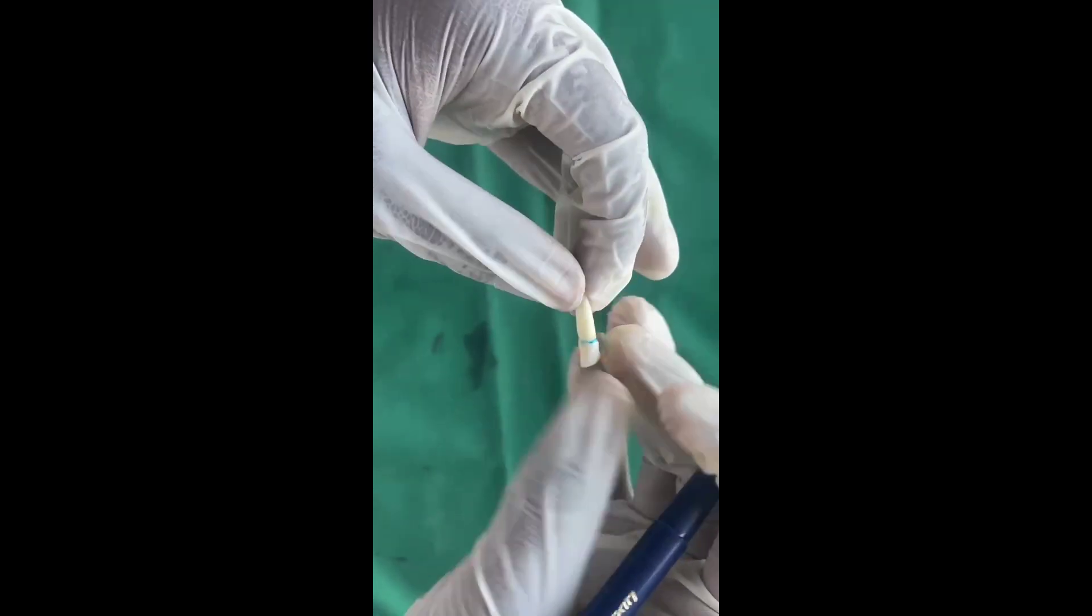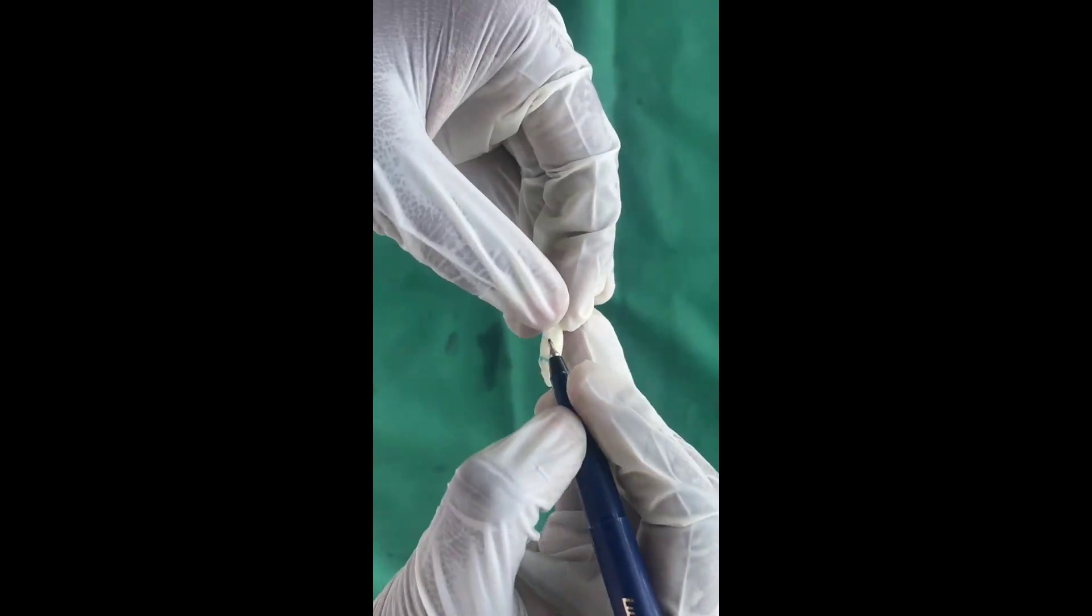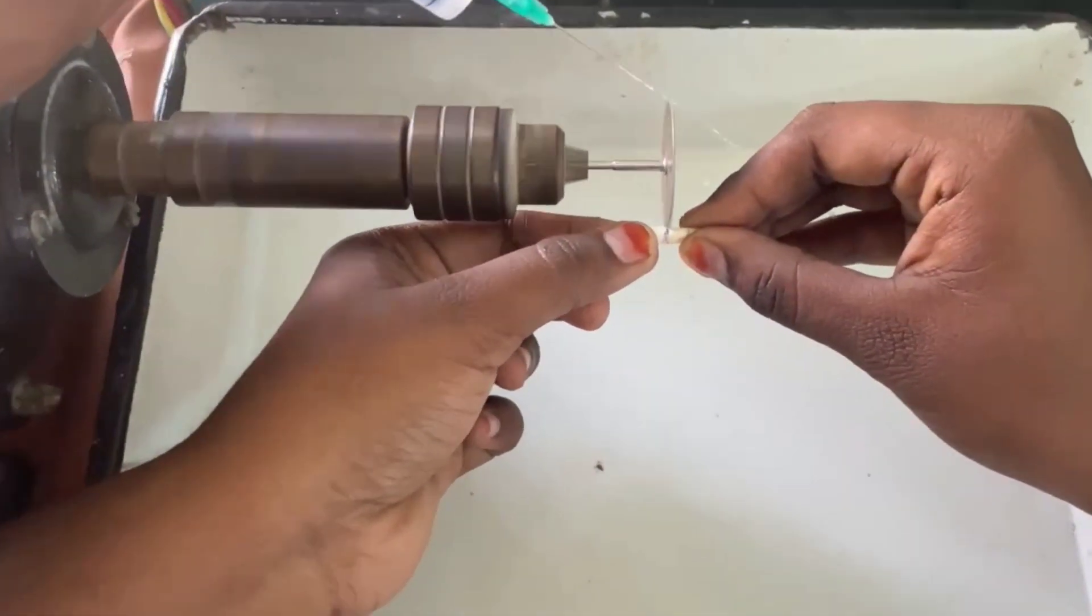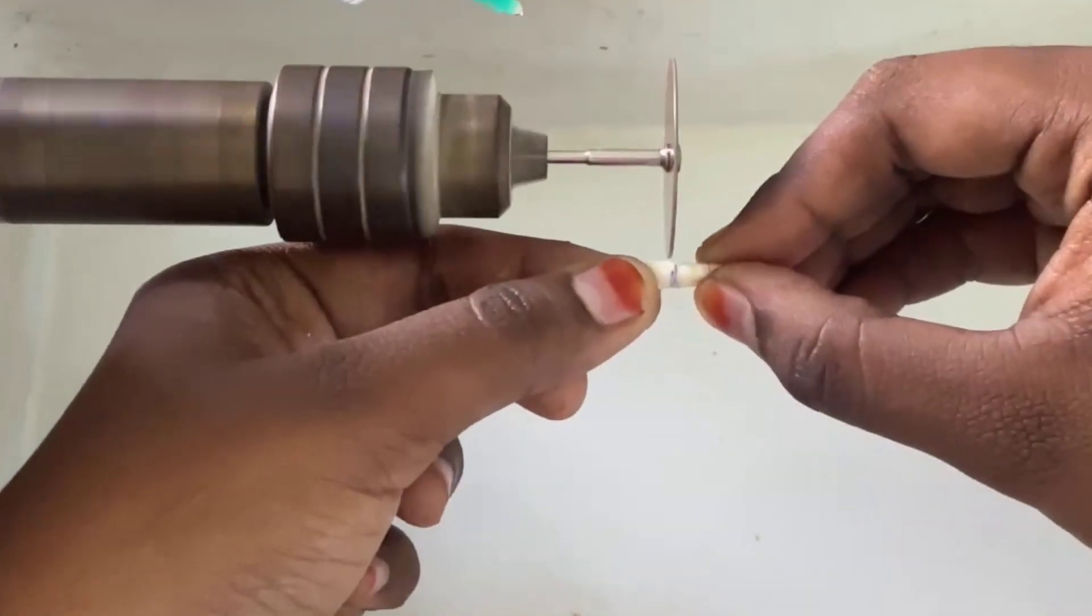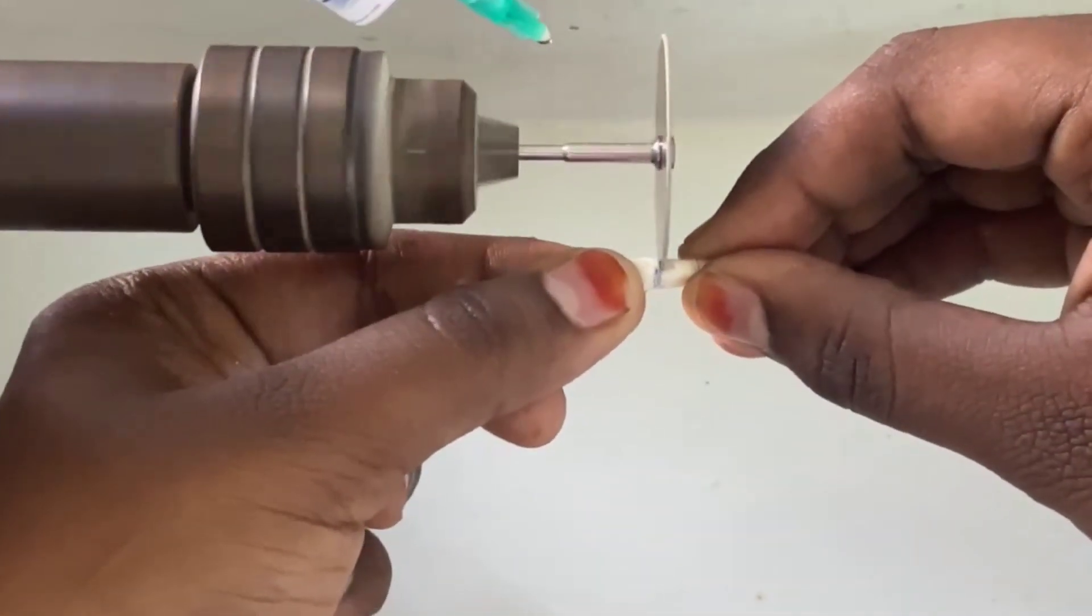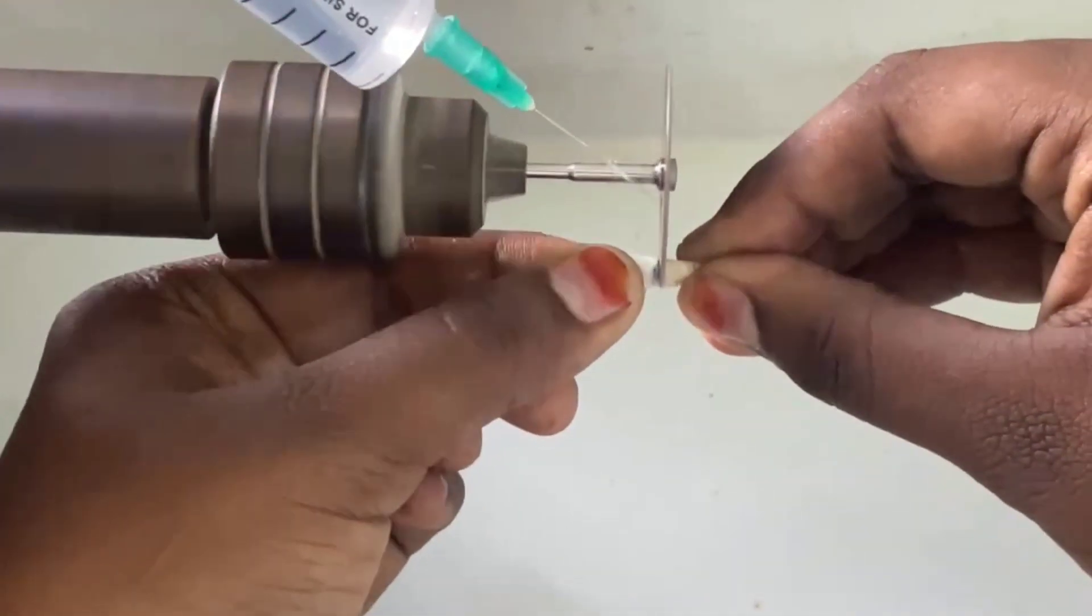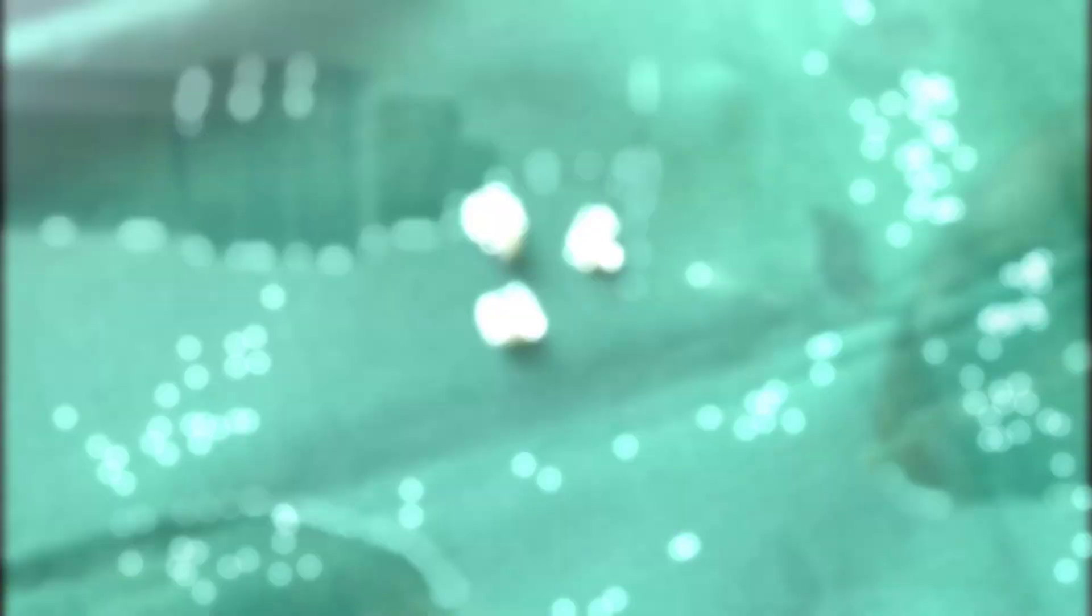For the cross section, the markings are made at the cervical level and the middle third of the tooth. The tooth should be cut into two to three sections at these levels using dental hand piece and diamond impregnated or carborundum disc.